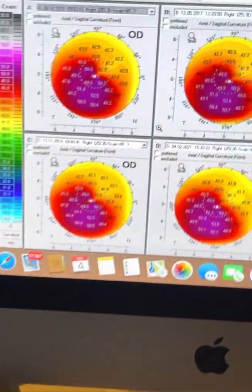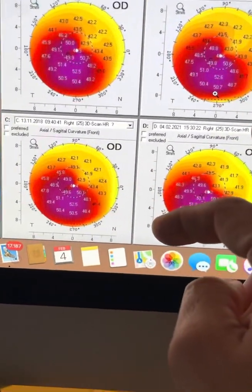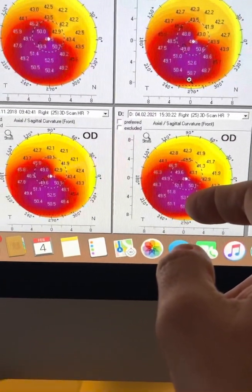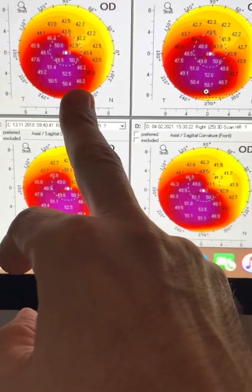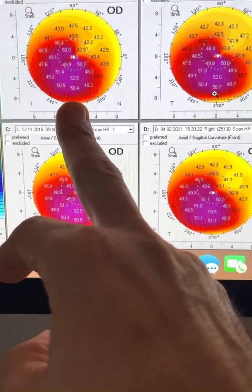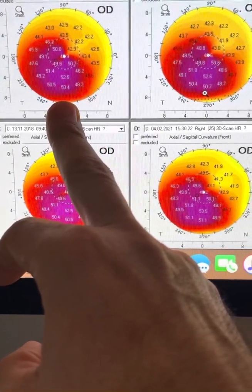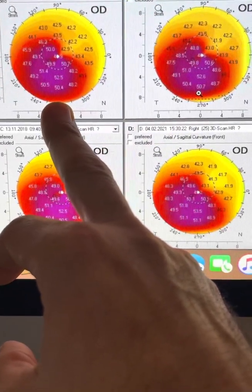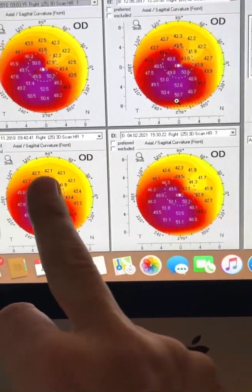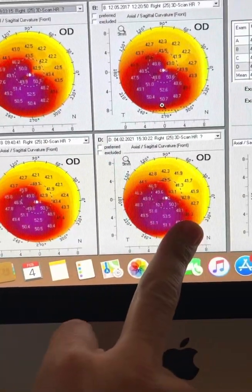We have here a very long follow-up on the right eye of a young lady. She's currently 32, actually she got married, she's planning on having children. We saw her in 2016 with this cone. We performed trans-epithelial corneal cross-linking, refractive cross-linking with the Avidro KXL2 device, currently called the Mosaic. We have her in 2017, we have her in 2018, and today, 2021.